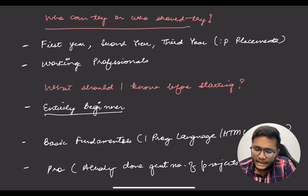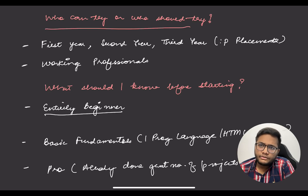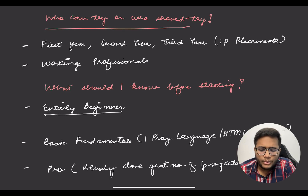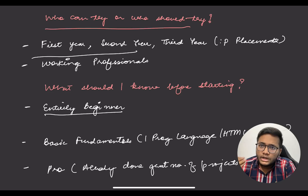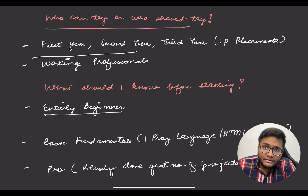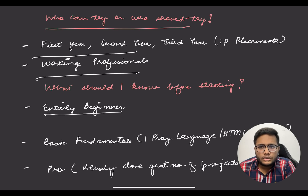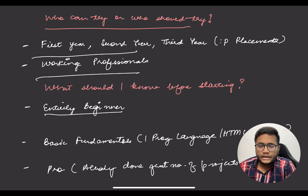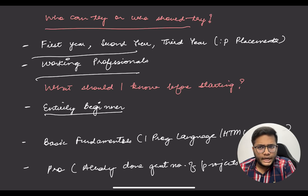Who should try? First year, second year, and third year candidates — although third year people would have placements coming soon. But if you're passionate about open source, this can be a good opportunity. Even if you're a first or second year student and don't have exposure, just apply — you'll gain understanding and have a better perspective when applying next year. It is also open for working professionals, as Google changed their guidelines last year to allow them to participate too.